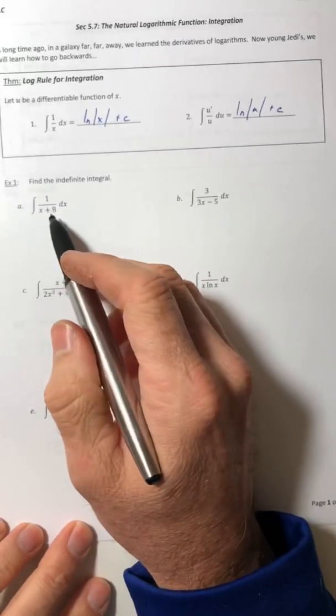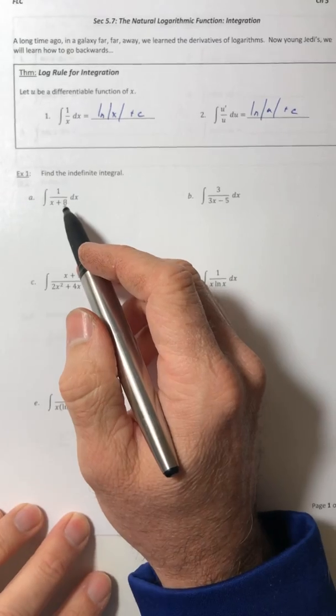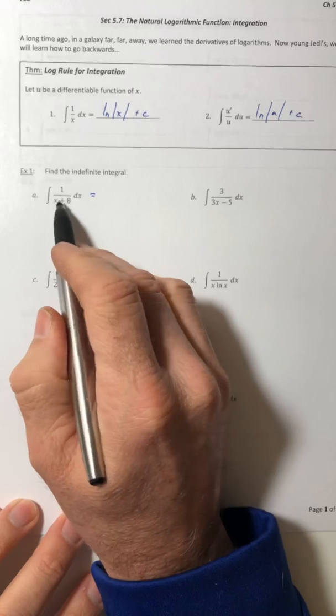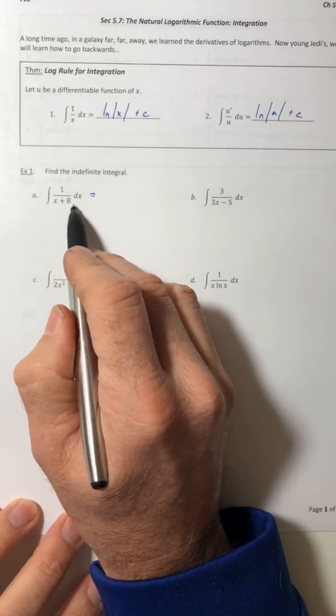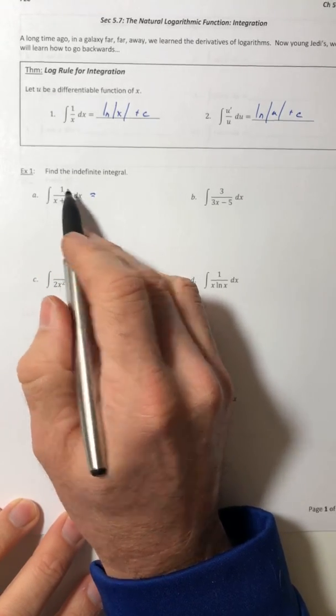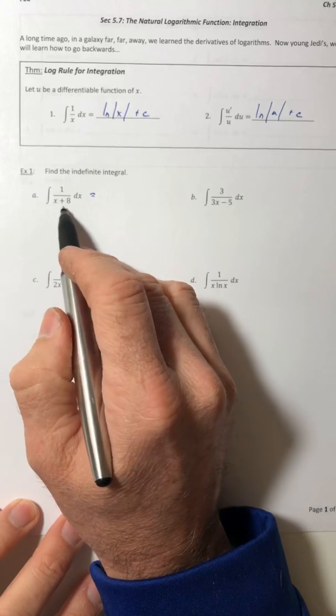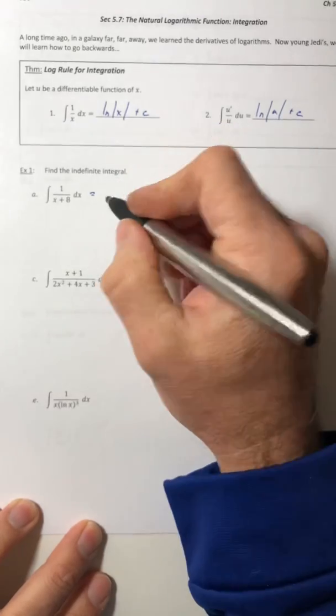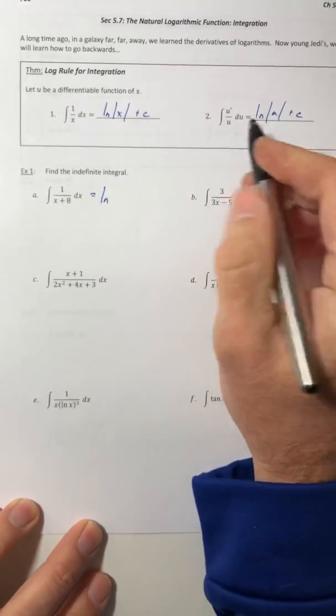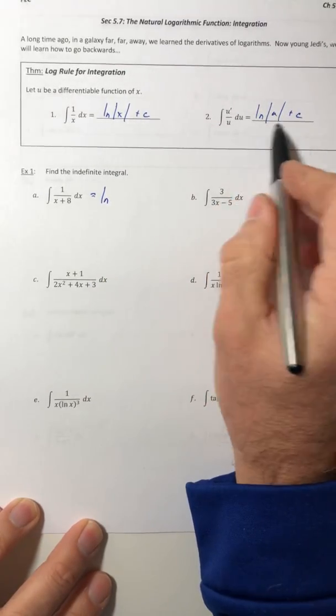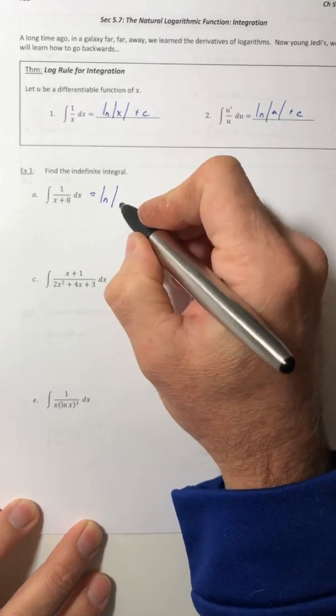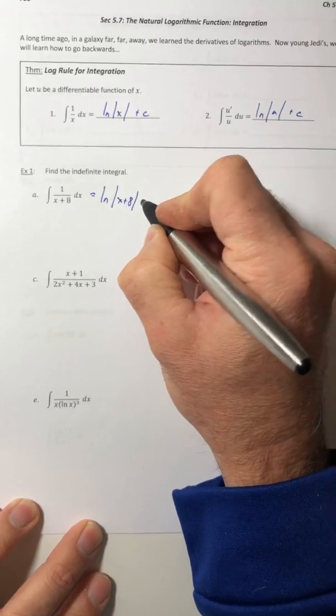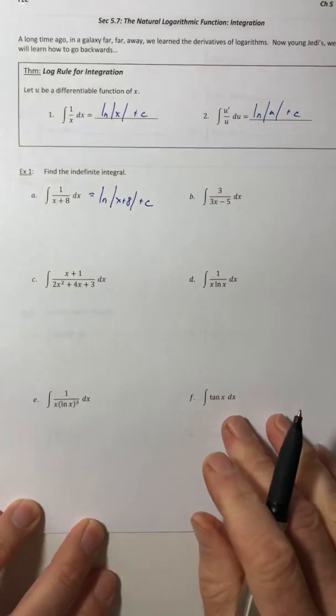Okay, so let's find the indefinite integral for these. So you have a fraction, so is the derivative of the denominator sitting on top. The derivative of x plus 8 is 1. So the answer is yes, it is. So you just get to straight integrate it using this. So ln of the absolute value of x plus 8 plus c.